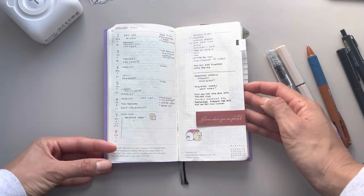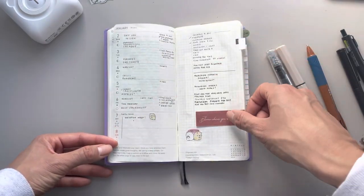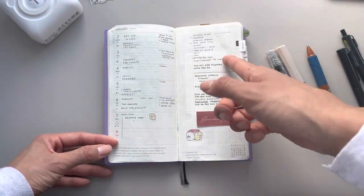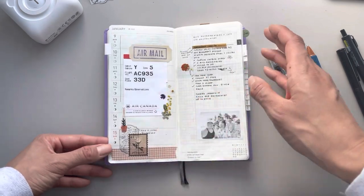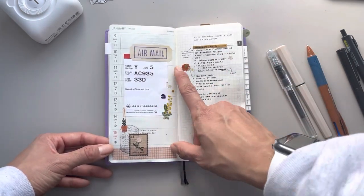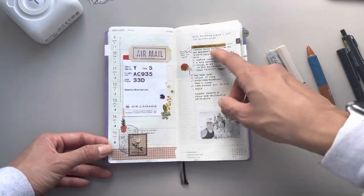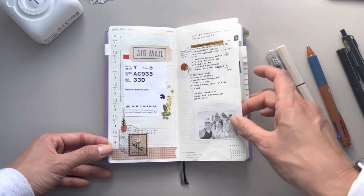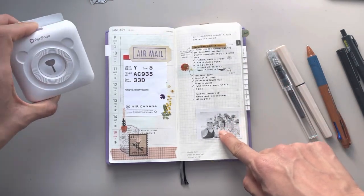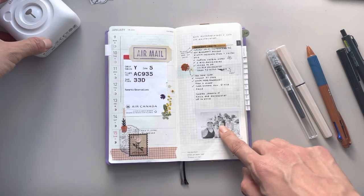Anyway, so I just continued kind of that same layout with the three sections. On this side, I started doing notes. Sometimes I did notes. Sometimes I did random stuff. This week we were on vacation, so I just pasted in some stuff.